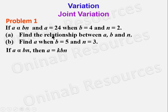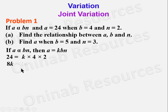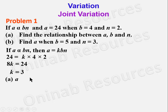When a = 24, b = 4, and n = 2, we have 24 = k × 4 × 2, giving 8k = 24. Dividing both sides by 8, k = 3. So the relationship is a = 3bn.